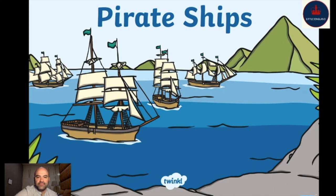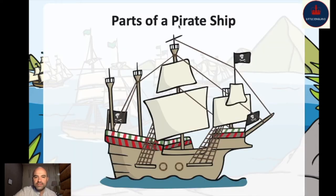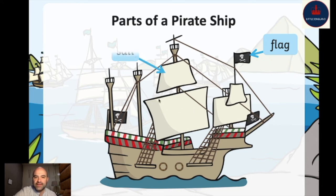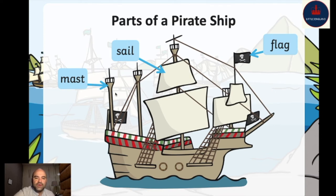Now it's all about pirate ships — isn't that awesome? We're going to learn about the different parts of a pirate ship. This first one — I bet you guys know this one — it is a flag. So we have a pirate flag: one, two, and three flags. Next we have sails: one, two, three, and four sails. And here's a mast — this ship has four masts: one, two, three, and four.